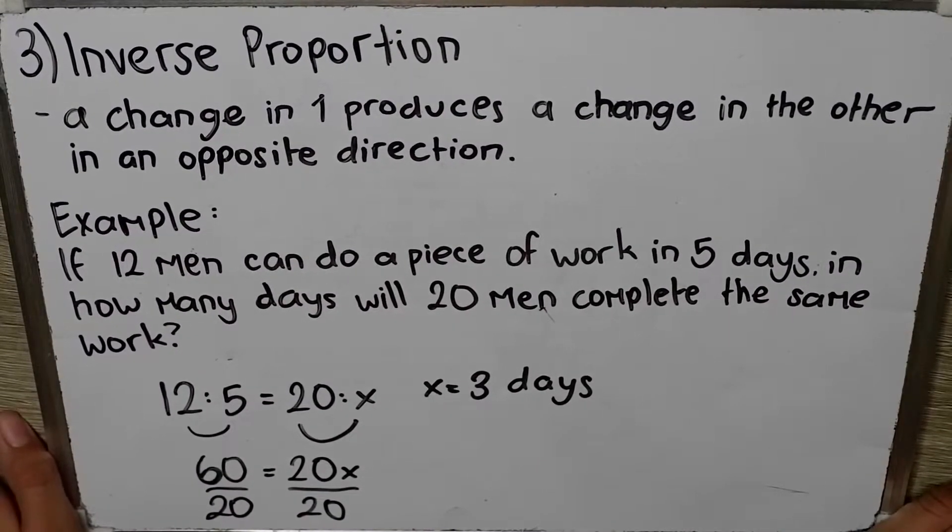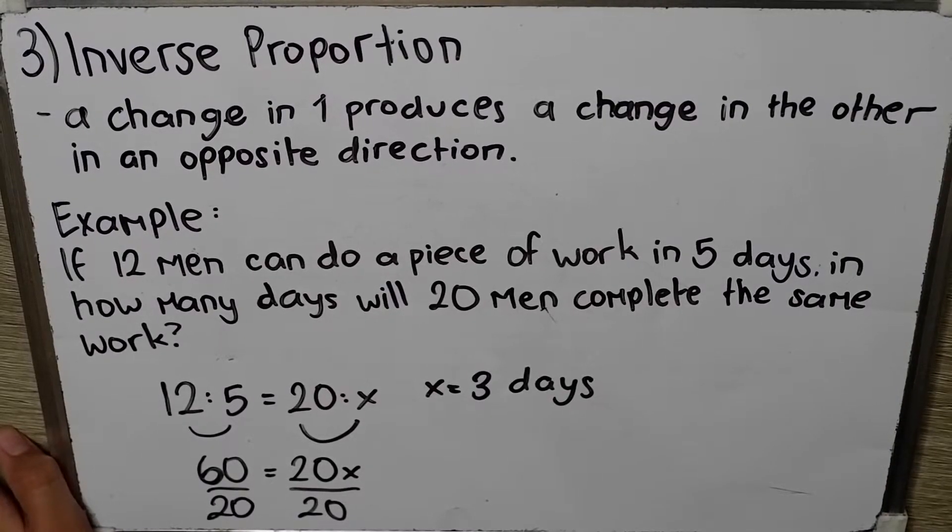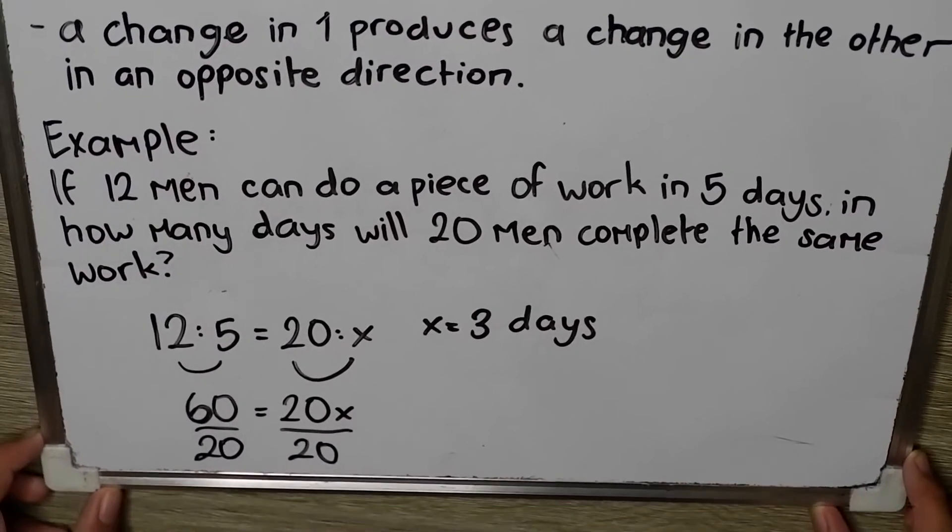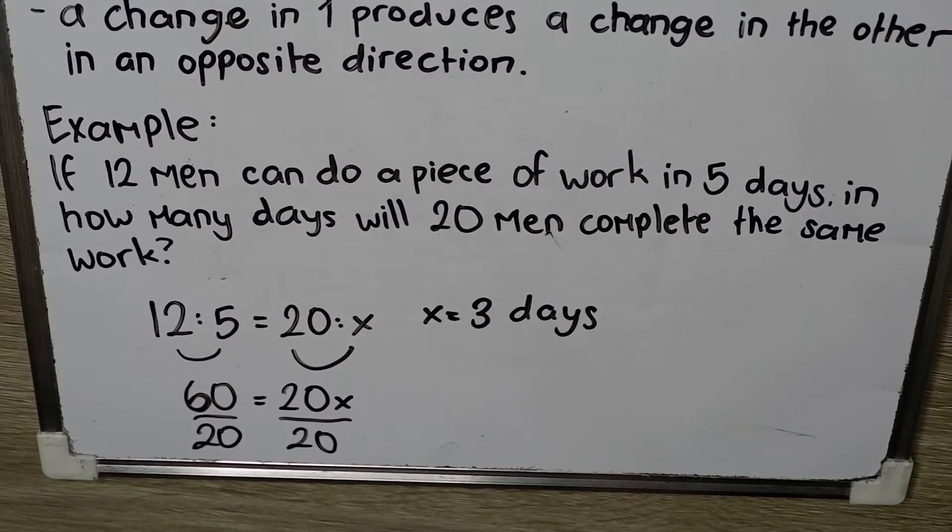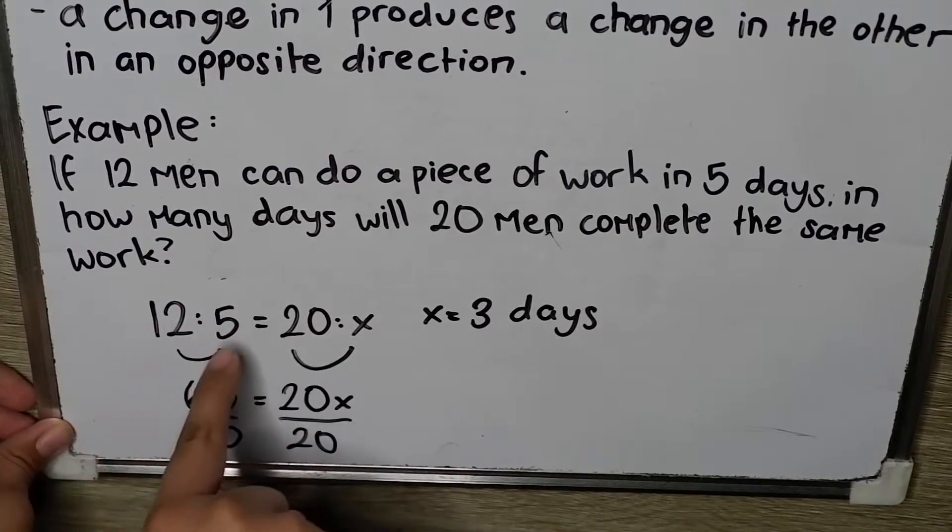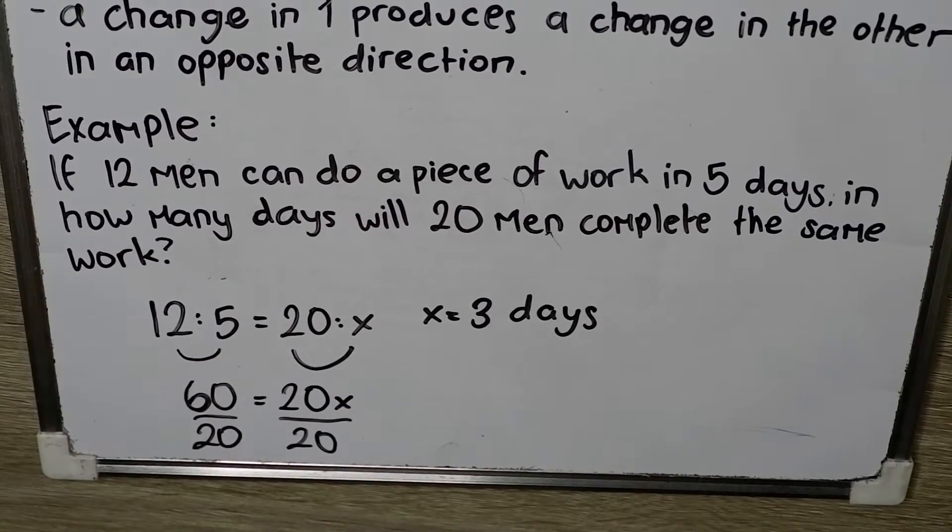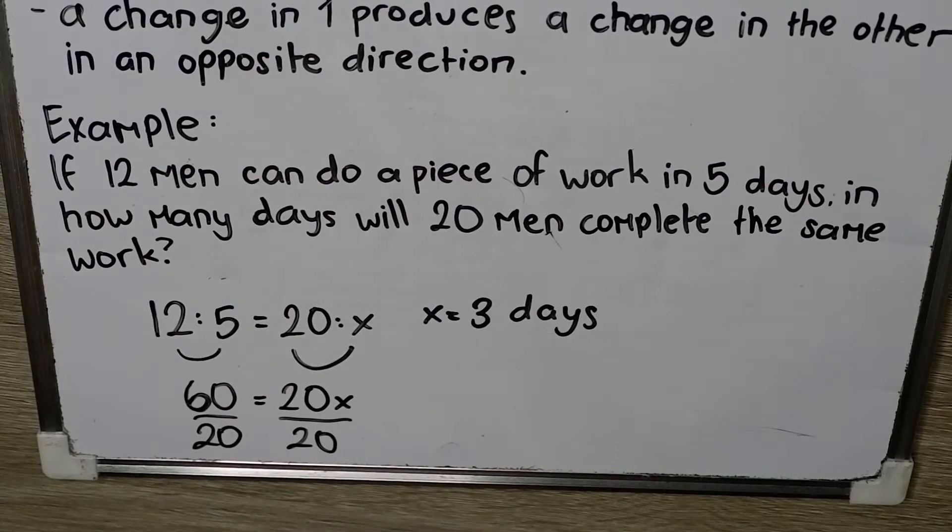Inverse proportion problems are mainly men and work. So, this is our solution. Unlike in the direct proportion, we multiplied the means. Oh, sorry. This is the means and this is the extremes. In the inverse proportion, we will multiply the first and the second equals to the third and the fourth. So, that is our solution.